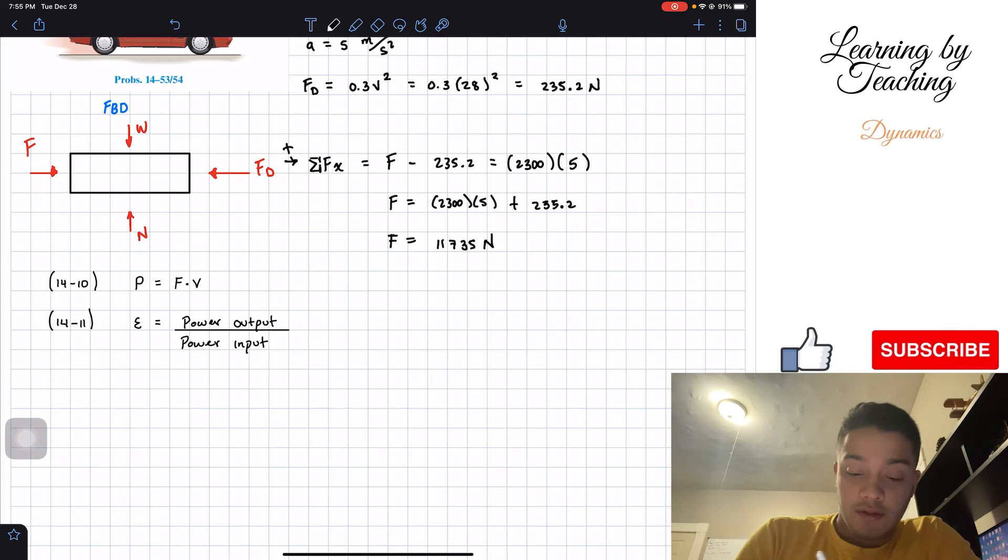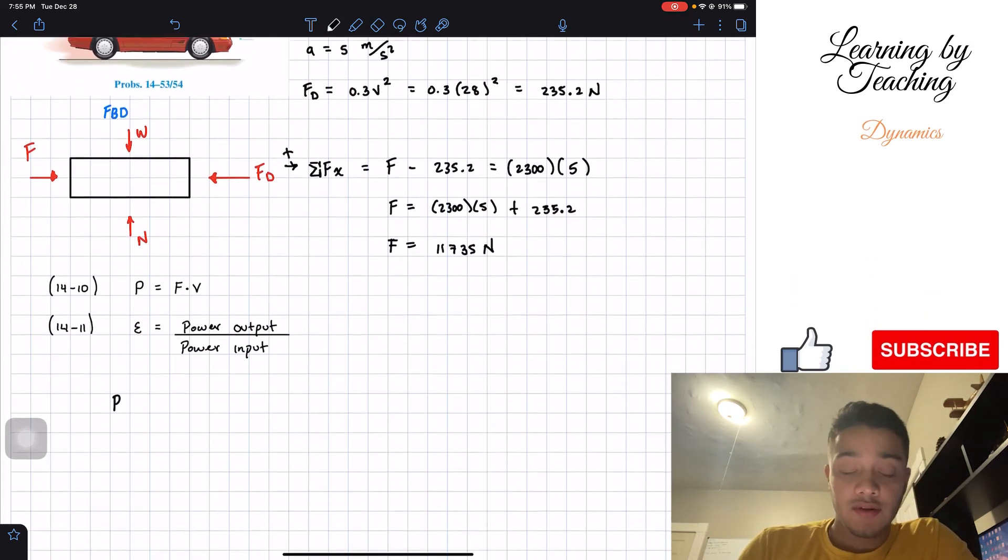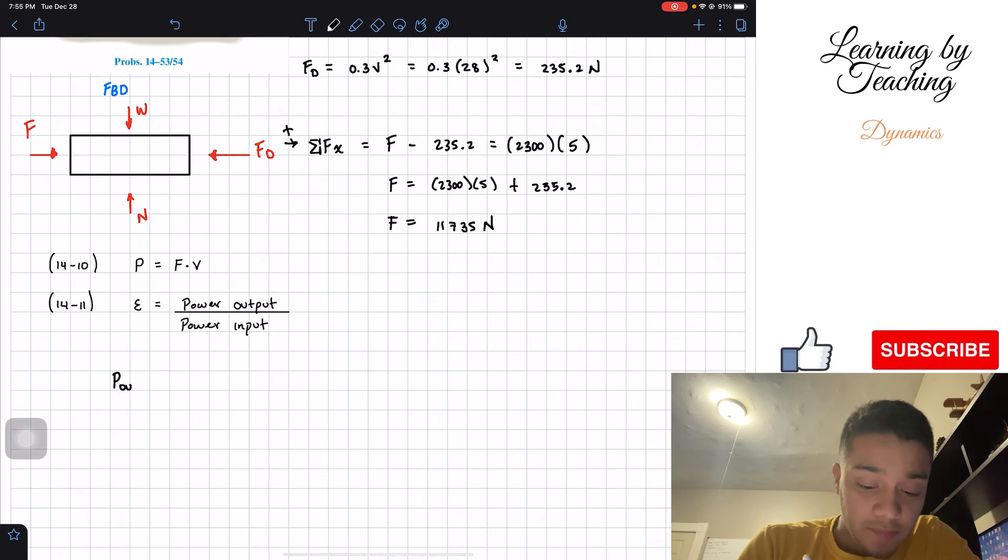So we can find the power that we're driving right now. I'm going to call this the power output. This is the power output of this car. It's going to be our force, 11,735 multiplied by our velocity, which was 28.